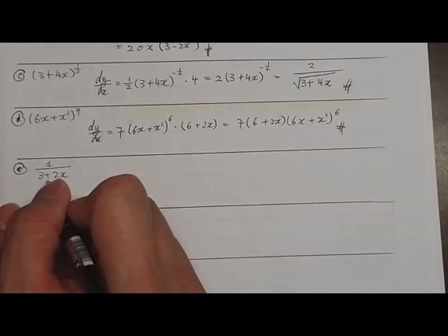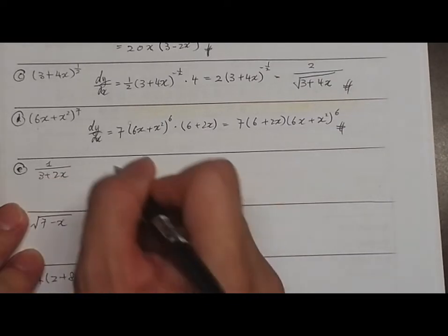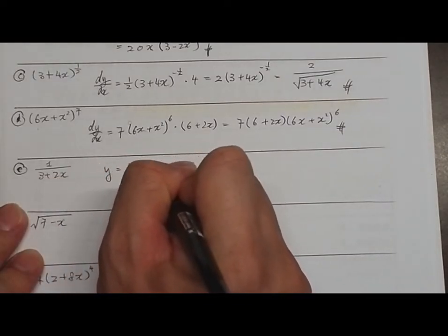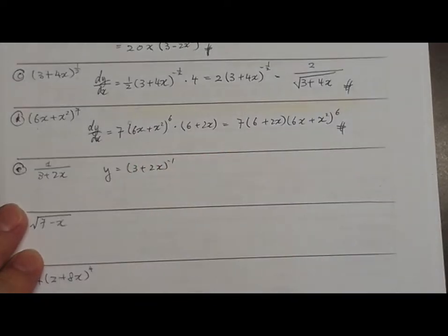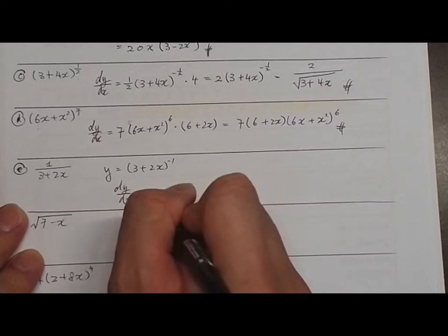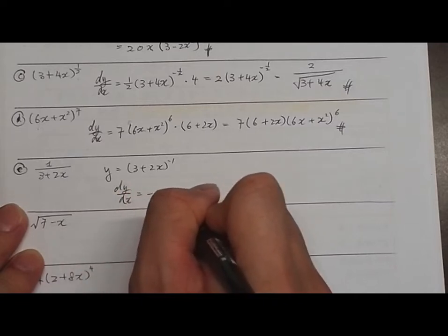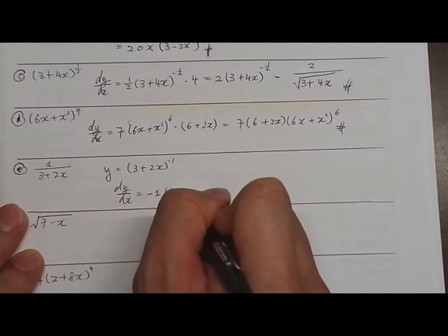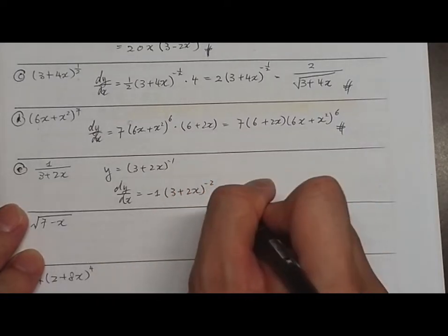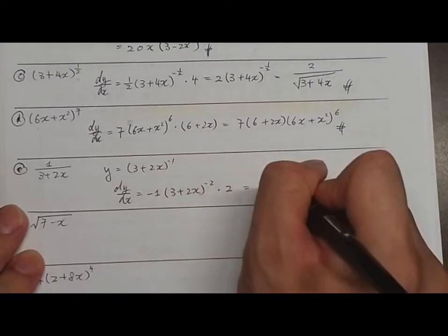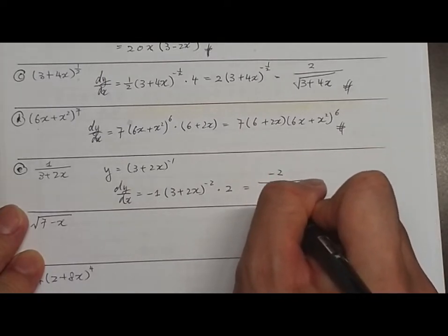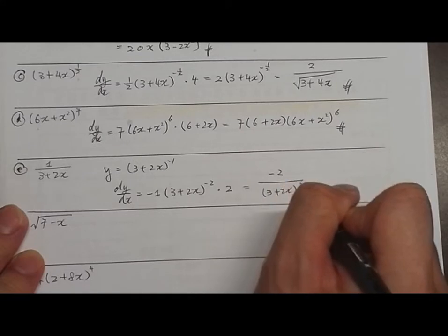Part E: y equals (3 + 2x)^(−1). dy/dx equals −1 multiplied by (3 + 2x)^(−2) multiplied by 2, giving −2 over (3 + 2x)².